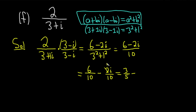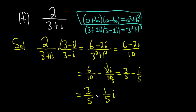Simplifying: 6/10 reduces to 3/5, and 2i/10 reduces to i/5. Most people write the answer as 3/5 minus 1/5 i, leaving the i at the end. That's the standard form for complex number answers. You're really multiplying by 1, which is why the conjugate goes both on top and bottom.